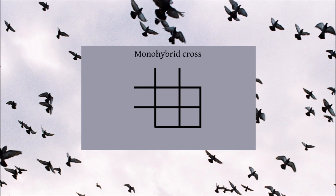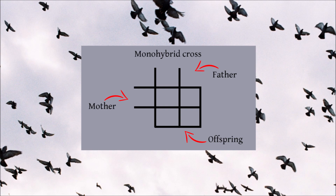This is what an empty Punnett square looks like. We have a top line, a line at the side, and four boxes. The two open sections at the top represent the father's two chromosomes, and the two down the side represent the mother's. Let's fill it in using crest as an example. Crest is an autosomal recessive gene, and its symbol is CR.